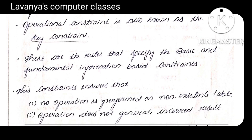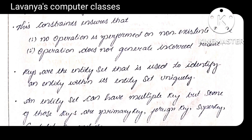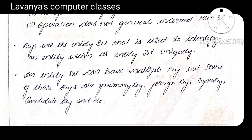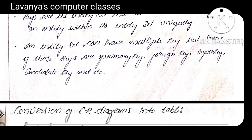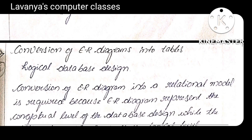Operational constraint: no operation is performed on a non-existent table, and operations must not generate incorrect results. These are all called operational constraints. Also note: an entity set can have multiple keys, but one of these keys is uniquely selected as the primary key.